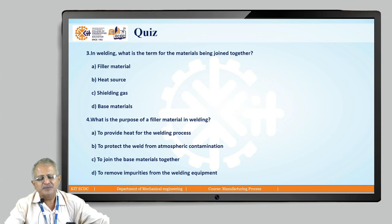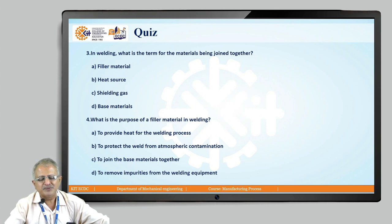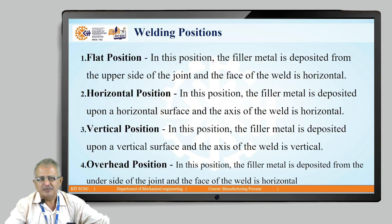The fourth question is: What is the purpose of filler material in welding? The four options are: to provide heat for welding processes; to protect the weld from atmospheric contamination; to join the base materials together; and to remove impurities from the welding equipment. Obviously, the answer is C — to join the base materials together.